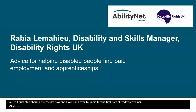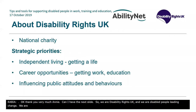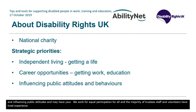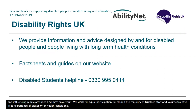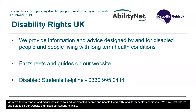Thank you, Annie. We are Disability Rights UK and we are Disabled People Leading Change. We are a national charity. Our strategic priorities are independent living, career opportunities, getting disability into work and education, and influencing public attitudes and behaviour. We work for equal participation for all, and the majority of trustees, staff and volunteers have lived experience of disability or health conditions. We provide information and advice designed by and for disabled people, we have fact sheets and guides on our website, a disabled student helpline, and we run several projects.